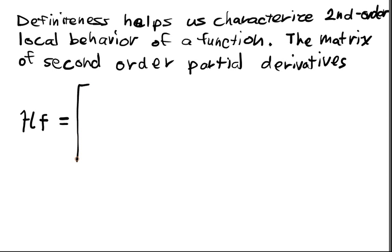I have a function, it's real valued, and H of F is equal to this matrix where I have d squared f over d x_1 squared. So I take a partial of f with respect to x_1 twice, d squared f over d x_1 d x_2.